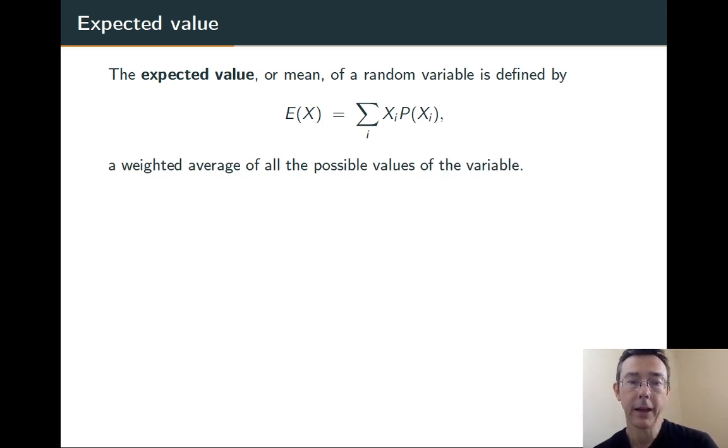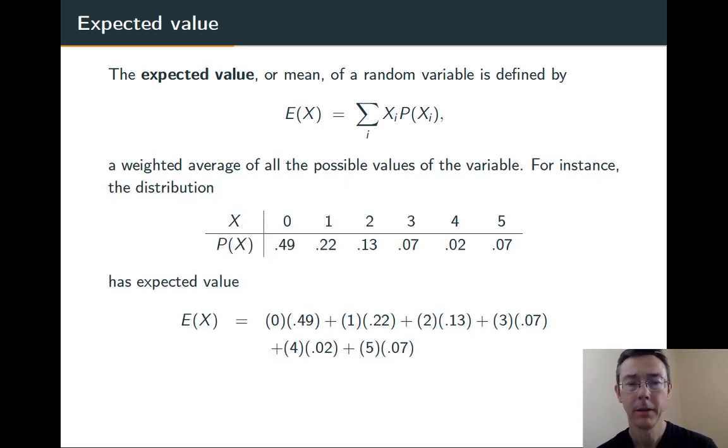The expected value, or mean, of a random variable is defined like this. Basically, take each of the values of the random variable, multiply them by their probabilities, and add up all those results. It's a weighted mean. This makes a lot more sense when we actually have an example in front of us.